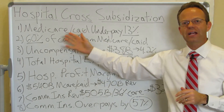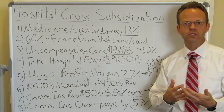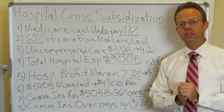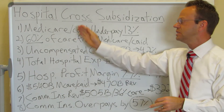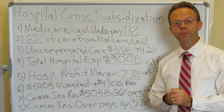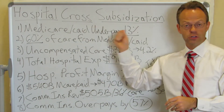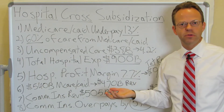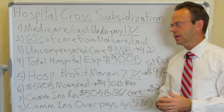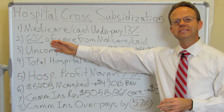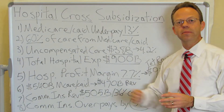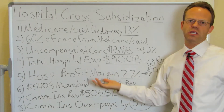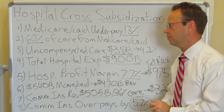These statistics are actually from the American Hospital Association themselves, and I will leave the links in the show notes. You can see here that Medicare and Medicaid underpay by 13%. How much care is actually provided by Medicare and Medicaid? Well, total hospital expense — 60% came in from Medicare and Medicaid patients. So 60% of the hospital's total business is from Medicare and Medicaid.